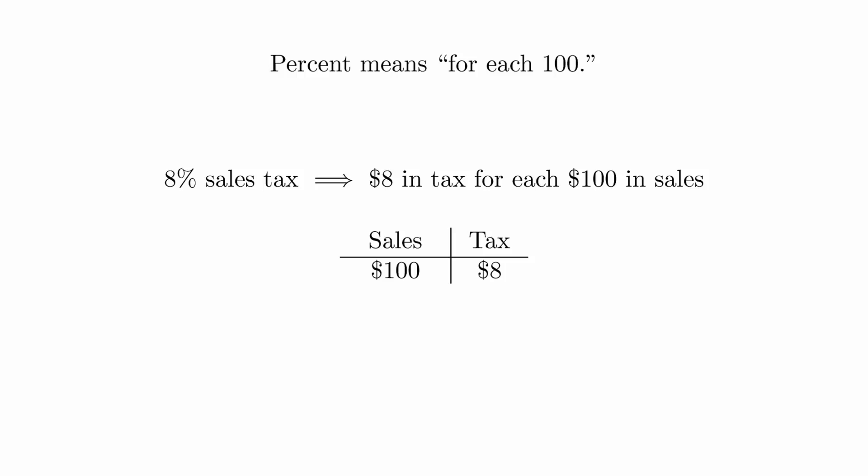This means that if you spend $200, you will pay $16 in taxes, and if you spend $1,000, you will pay $80 in taxes. This works out easily when working with multiples of $100, but what happens if you need to compute the sales tax for a purchase of $632.74?